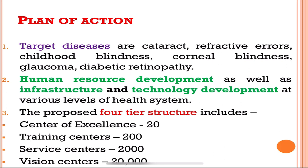Human resource development is also included — improving the skills and knowledge of ophthalmologists — along with infrastructure and technology development at the various levels of the health system: primary level (PHCs), secondary level (CHCs), and district hospitals.